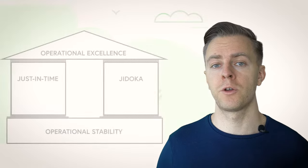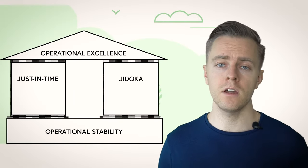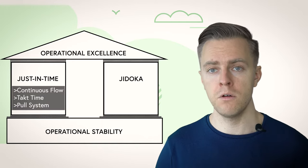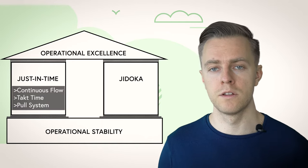What is just-in-time production? It is one of the main pillars of the Toyota production system. According to the Lean Enterprise Institute, it has three central elements: continuous flow, takt time, and the pull system.